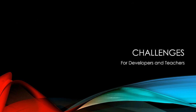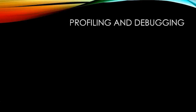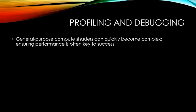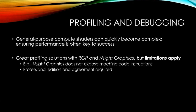This seems like a great argument for using Vulkan for everything compute-related, but I want to be transparent about remaining issues. General-purpose compute shaders can quickly become complex, and maintaining and ensuring performance is key. Luckily, we have a great range of solutions for debugging and profiling from respective vendors — for instance, Nsight Graphics and RGP — but limitations do apply. For example, Nsight Graphics does not by default expose machine code instructions, something you may rely on in CUDA profiling; accessing that requires a professional edition and agreements with the company.